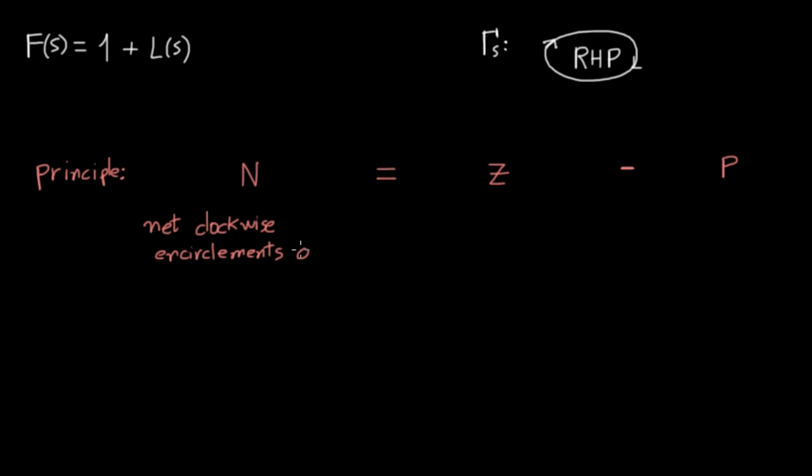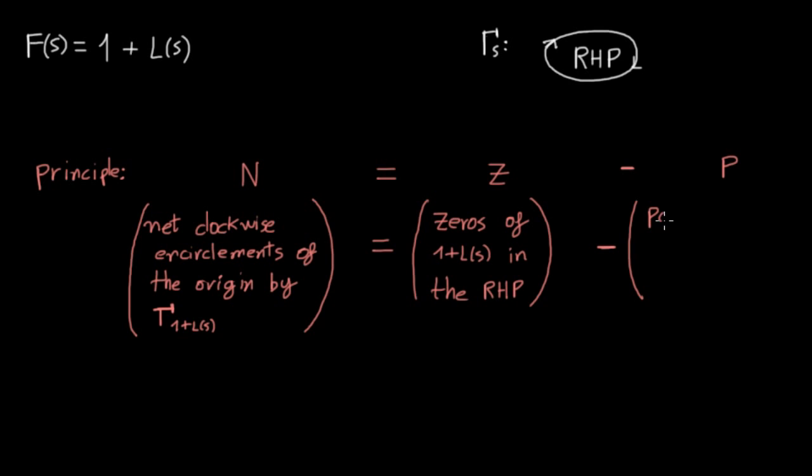How can we benefit from this? Well, imagine that we pick for f, 1 plus L, the characteristic equation of our closed-loop system, and that we also choose as the input trajectory one that encompasses the whole right-half plane in clockwise direction. In that case, the argument principle is telling us the number of net clockwise encirclements of the origin by the image trajectory gamma 1 plus L is equal to the number of zeros of 1 plus L in the right-half plane minus the number of poles of 1 plus L in the right-half plane.